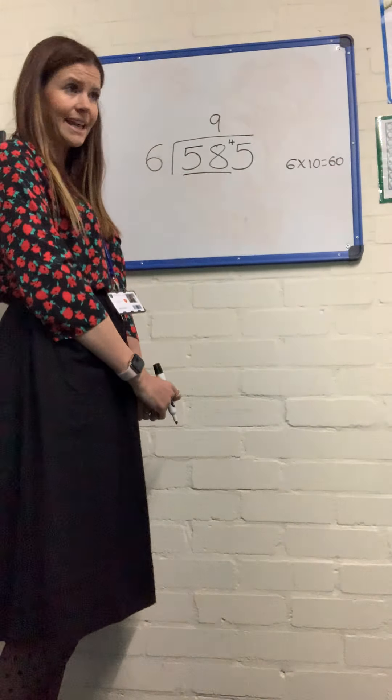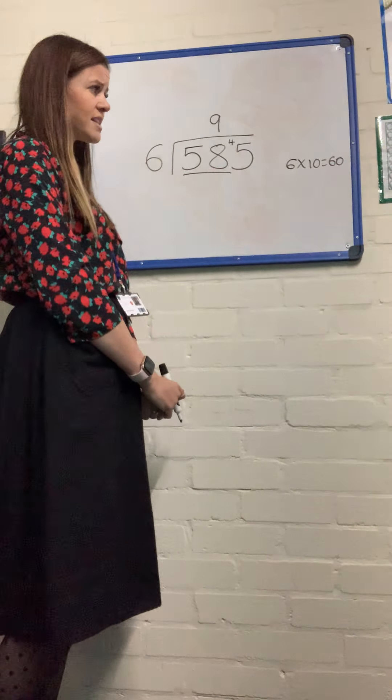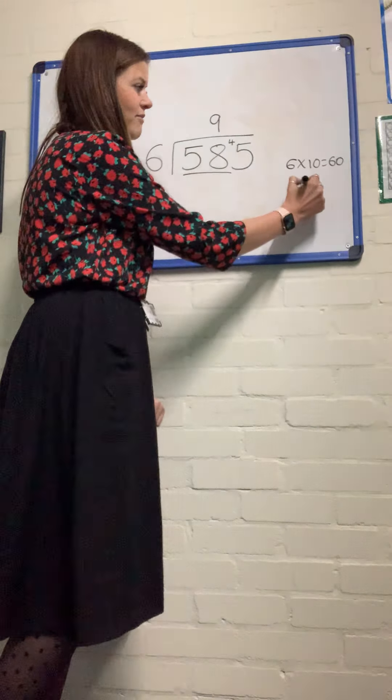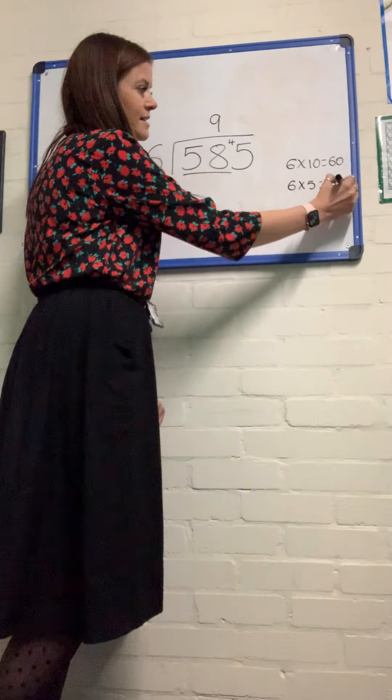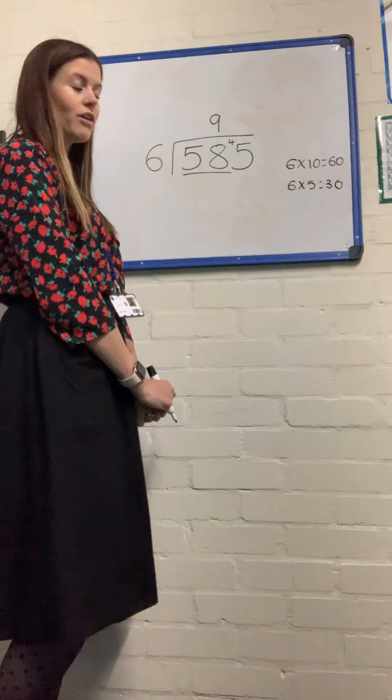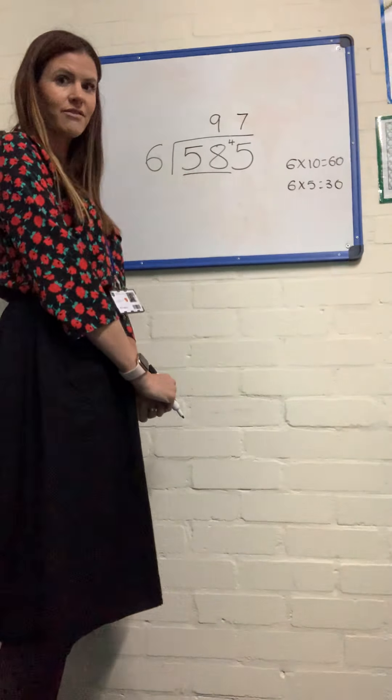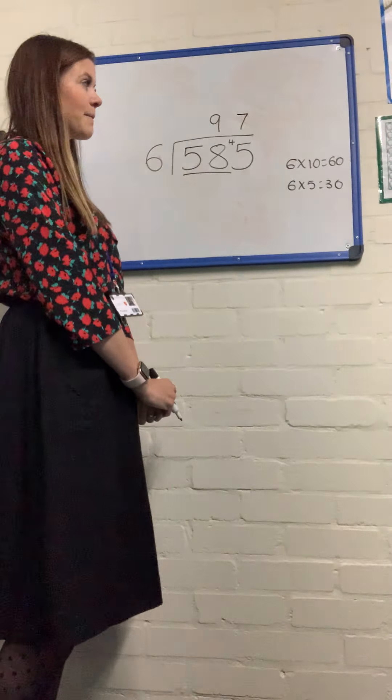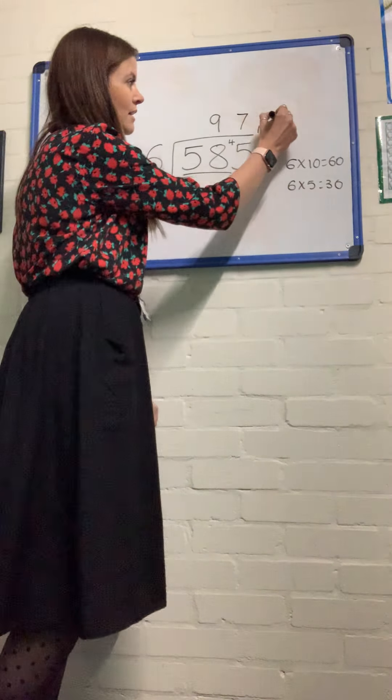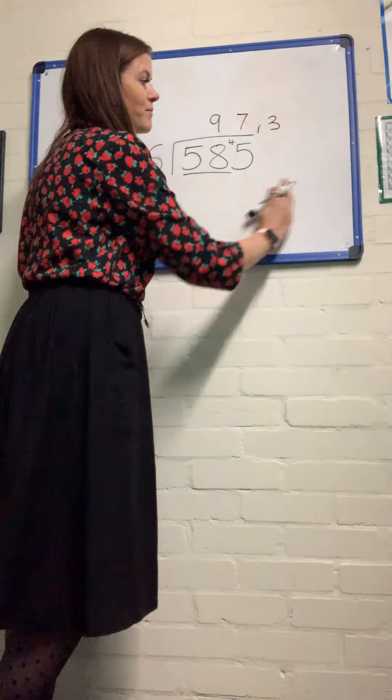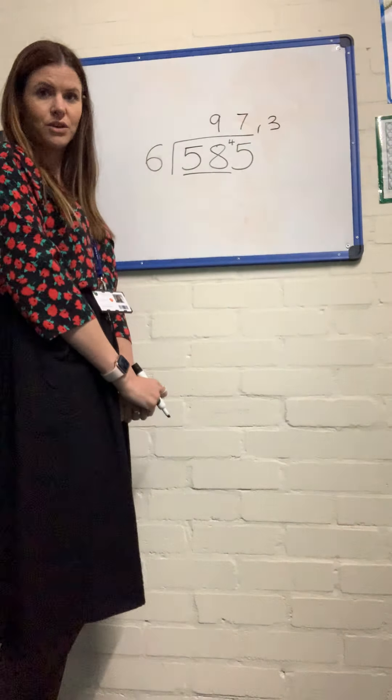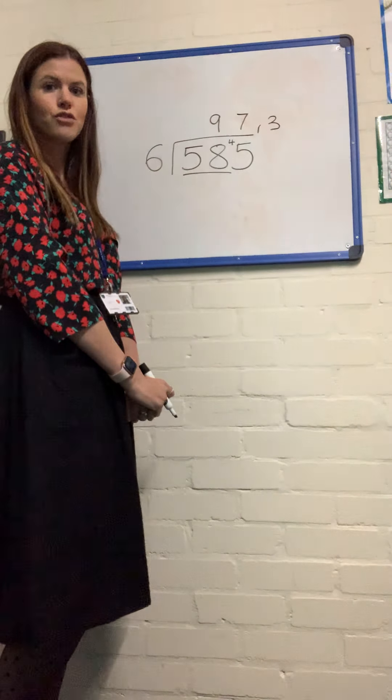So I'll count up in my 6s again. Well, I can go as far as 30. I know that 6 times by 5 is 30, 6 times by 6 is 36, then I've got 42. So there are 7 6s in 45 with 3 left over. I can write remainder 3 down. So that's one way of answering your question: 97 remainder 3.